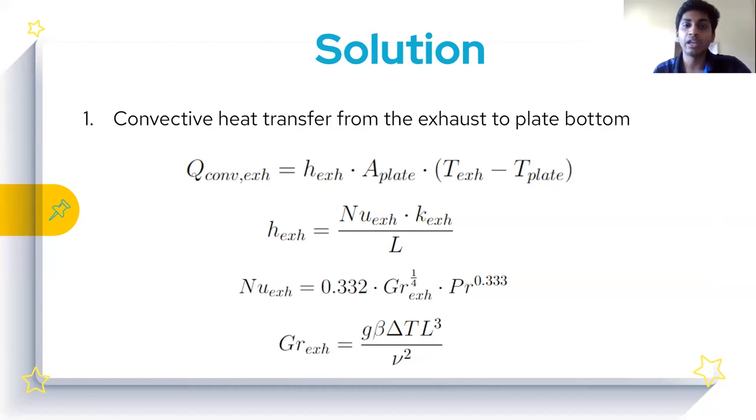The governing equation is the convection equation: Q_convection of the exhaust gas equals h of the exhaust gas times area of the plate times delta T. In this convection equation, we need to calculate h of the exhaust gas using the Nusselt number correlations. Because the flow is laminar, we use the laminar Nusselt number correlation: Nu = 0.332 × Gr^(1/4) × Pr^0.333.